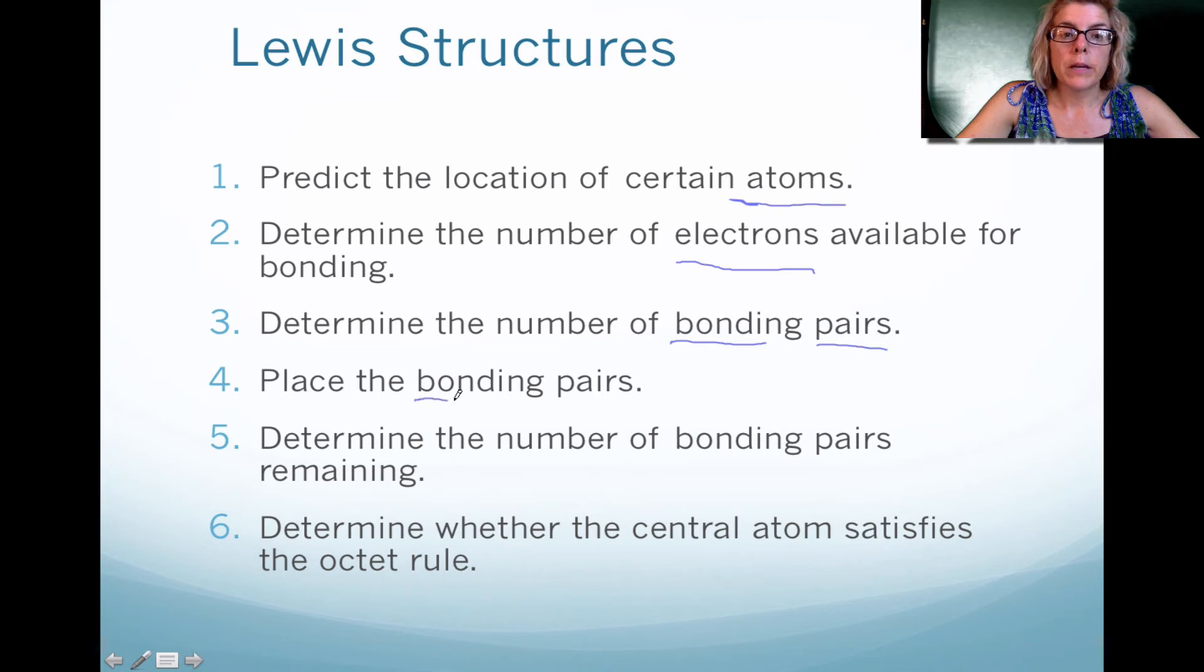Then, once you figure out the number of bonding pairs, you're going to place them around the atoms. You're going to figure out, are there any electrons left over? And sometimes there are. If that's the case, you're going to put those leftover electrons on the central atom. And you want to make sure that you have a total of eight electrons around each atom except hydrogen. So hydrogen does not need eight electrons. So please remember that the atoms except hydrogen want eight valence electrons.